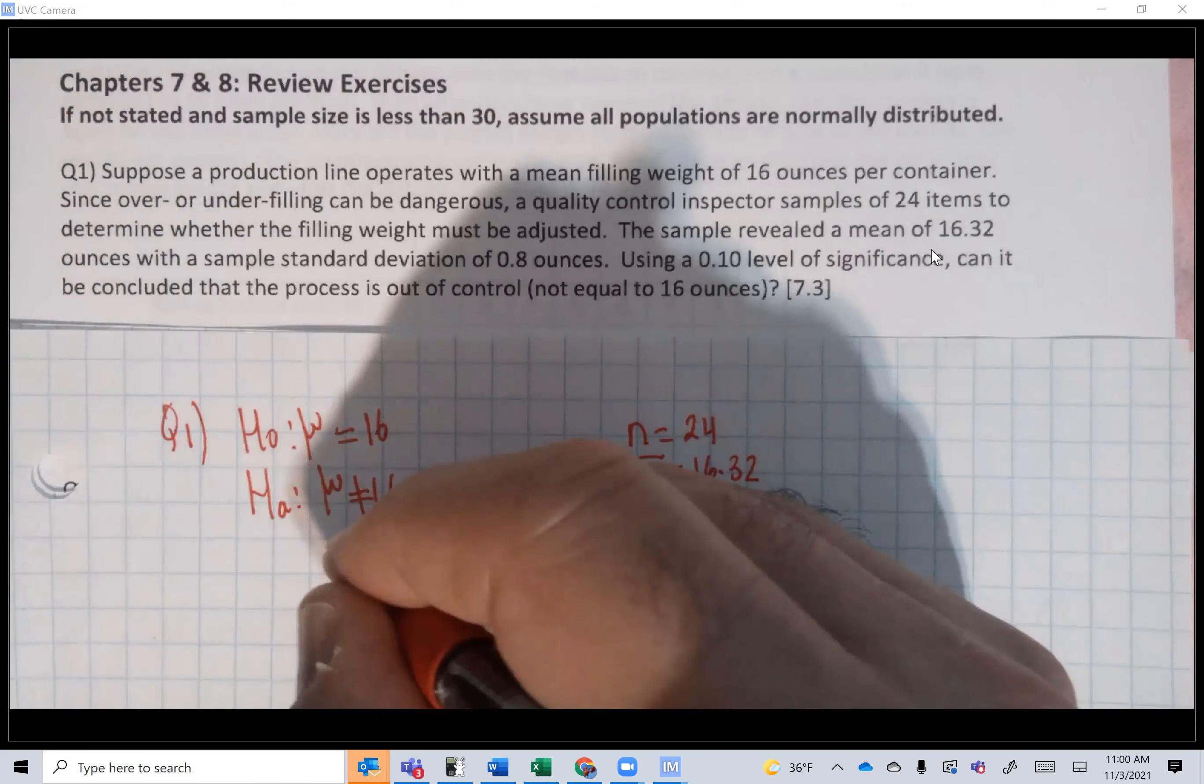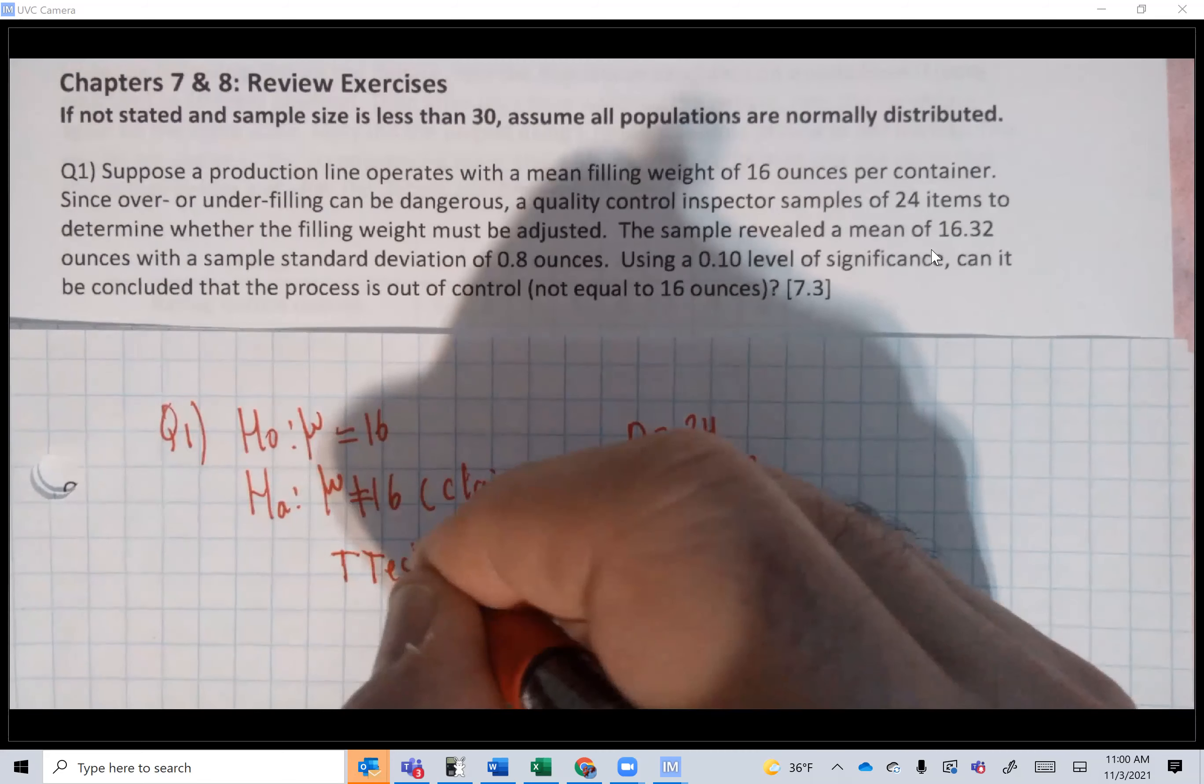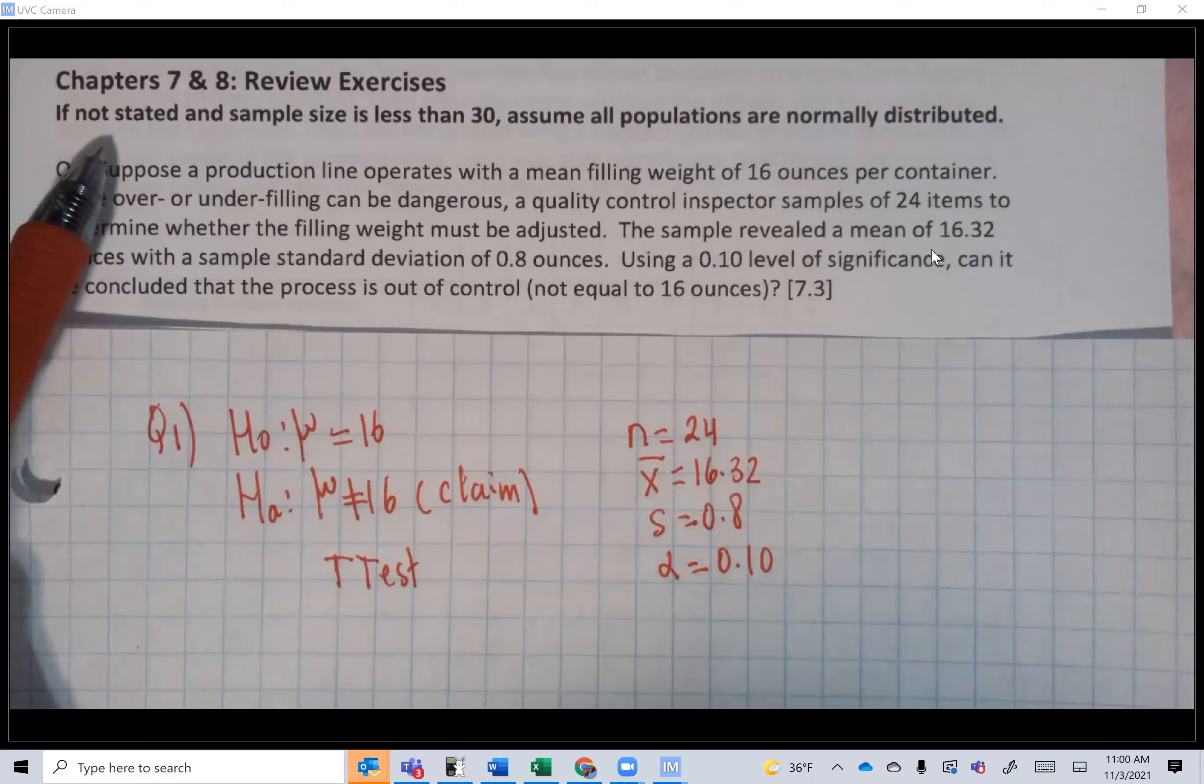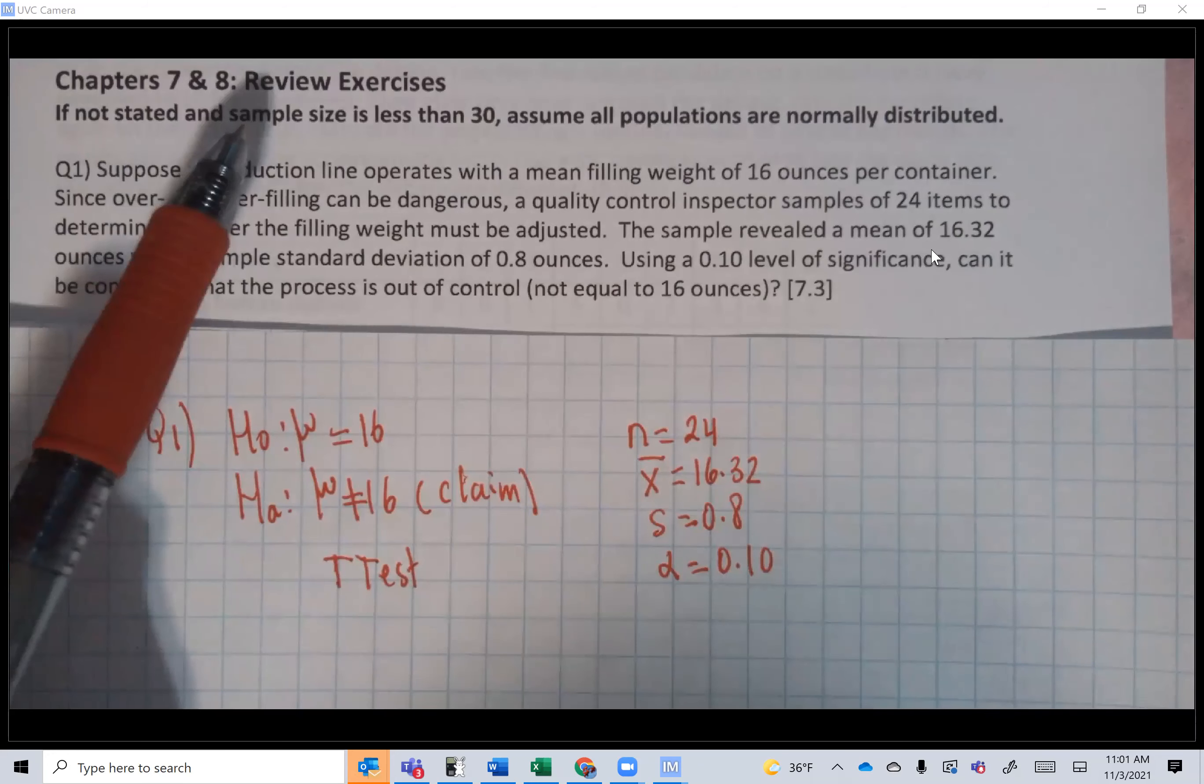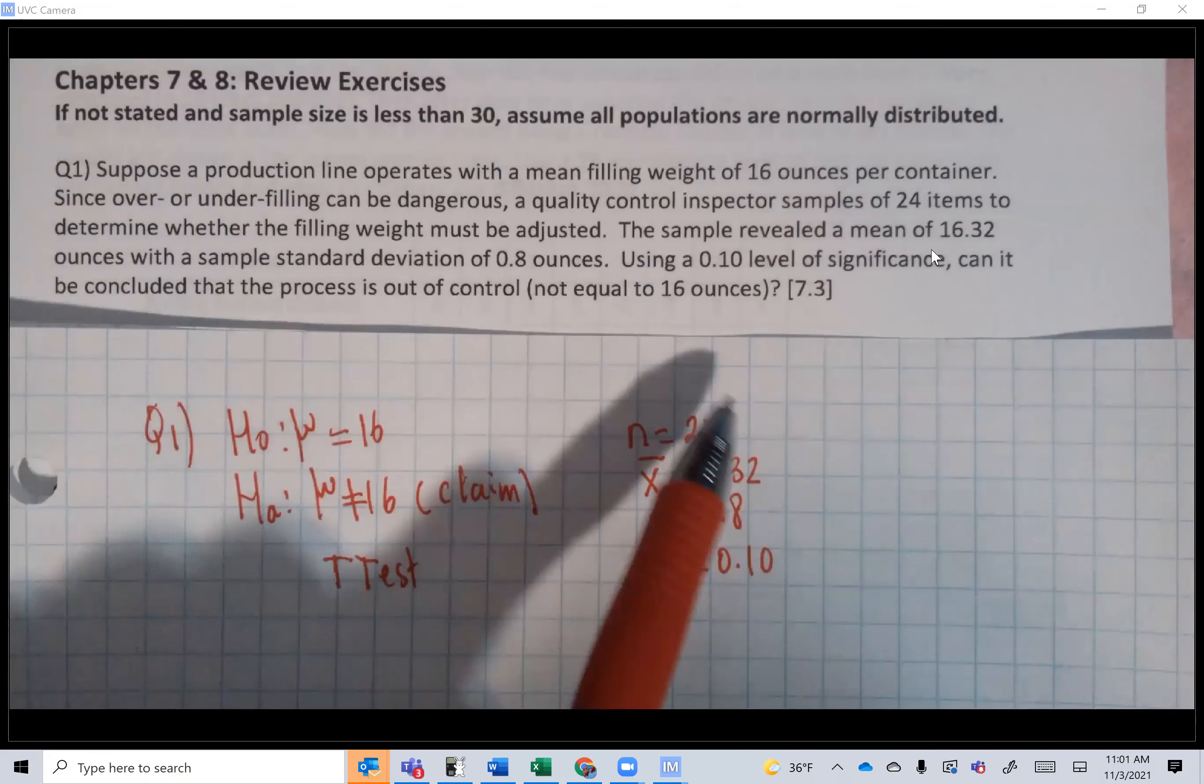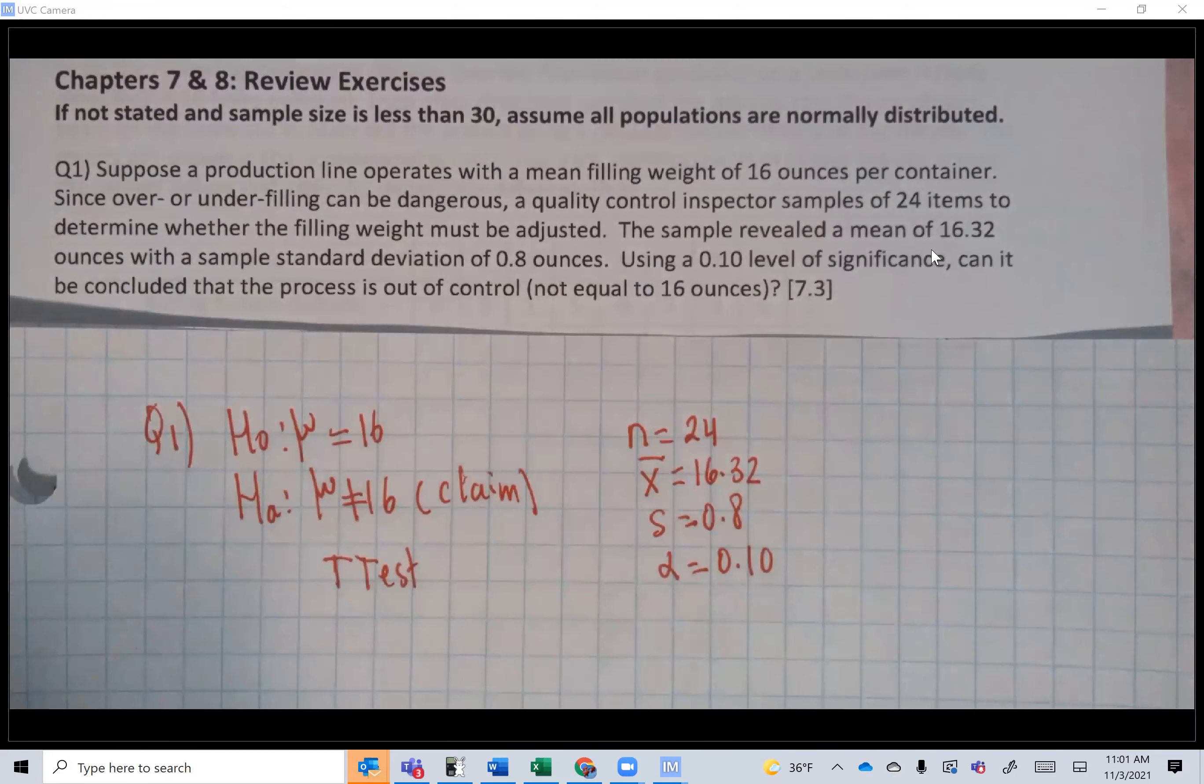Since the sample size is less than 30, assume population is normally distributed. What we're using today is called the p-value approach. Let's run the t-test.